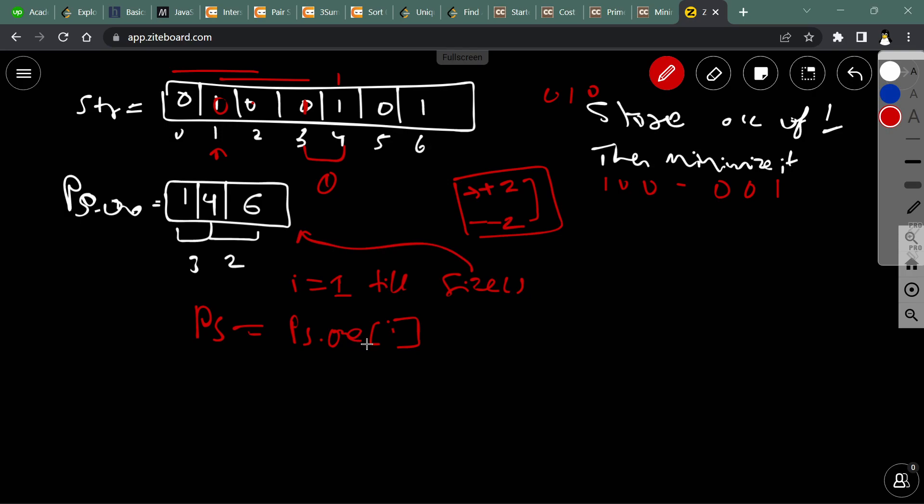While ps[i] is greater than the zeroth element, which means this element's value, which means position is greater than this value, we minimize distance.